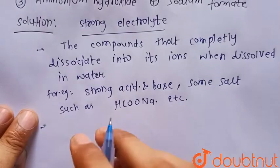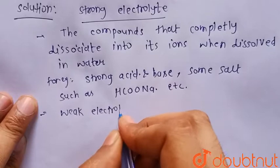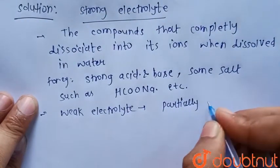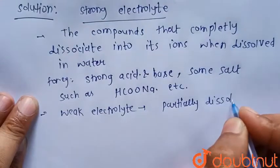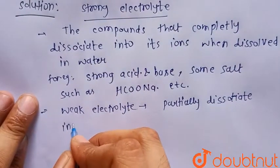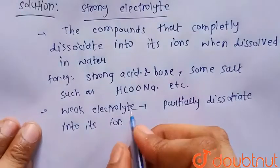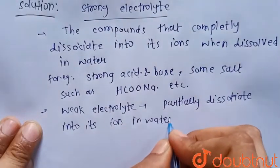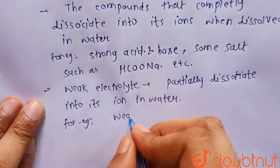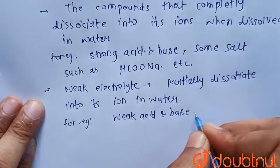Weak electrolytes are those that partially dissociate into their ions in water. Examples include weak acids and weak bases.